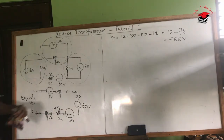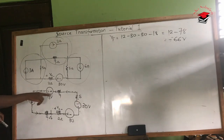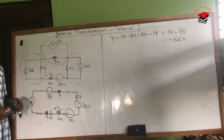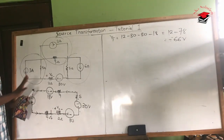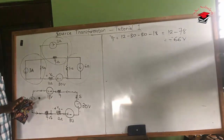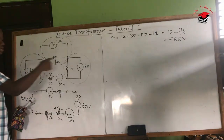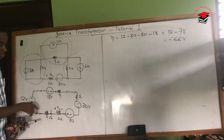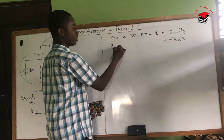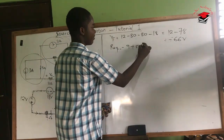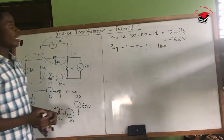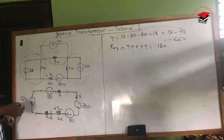We also have resistors in series: 9 ohms, 5 ohms, 2 ohms, and 4 ohms. I want to maintain the 2-ohm resistor separately, so I combine the other three: 9 + 5 + 4 = 18 ohms equivalent. So we have a total voltage of −36 volts and an equivalent resistance of 18 ohms for the other resistors. Let's redraw the simplified circuit.